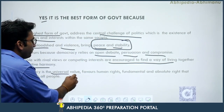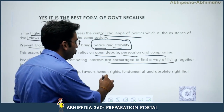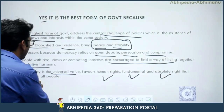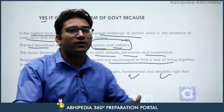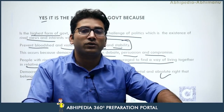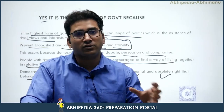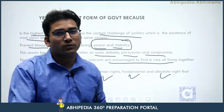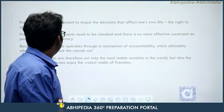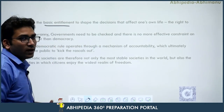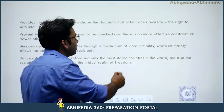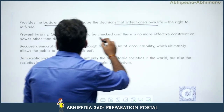Democracy is a universal value that favors human rights, fundamental rights, and absolute rights belonging to all people. In earlier videos we discussed civil rights, natural rights, fundamental rights, and human rights. Democracy provides the basic entitlements — fundamental rights and human rights — to shape decisions that affect our own lives, which is the right to self-rule. In democracy we exercise the right to self-rule by providing representation to someone to govern us.